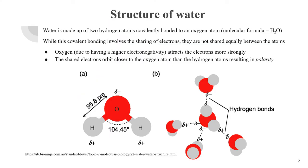Structure of water. Water is made up of two hydrogen atoms covalently bonded to an oxygen atom. While this covalent bonding involves the sharing of electrons, they are not shared equally between the atoms. Oxygen attracts the electrons more strongly, and shared electrons orbit closer to the oxygen atom than the hydrogen atoms, resulting in polarity.